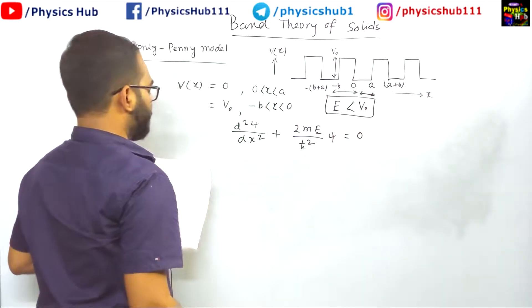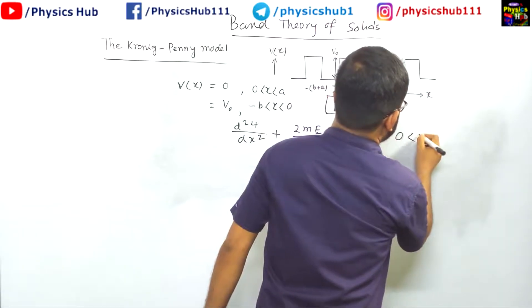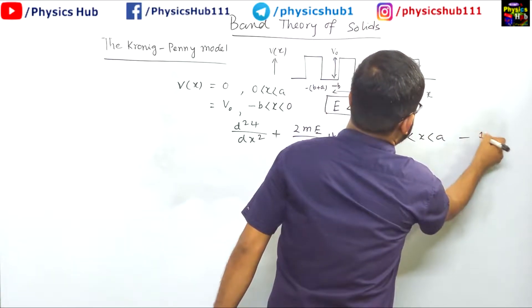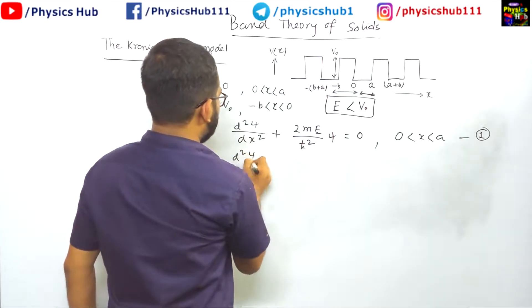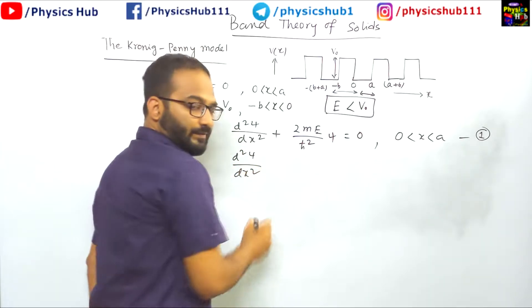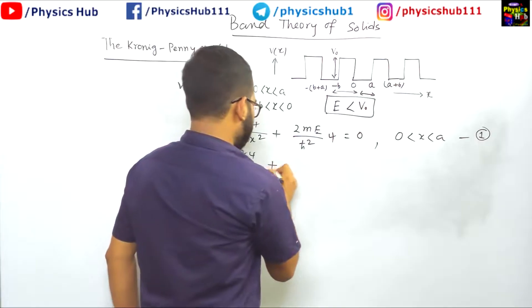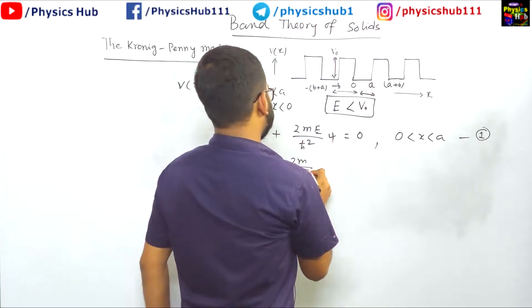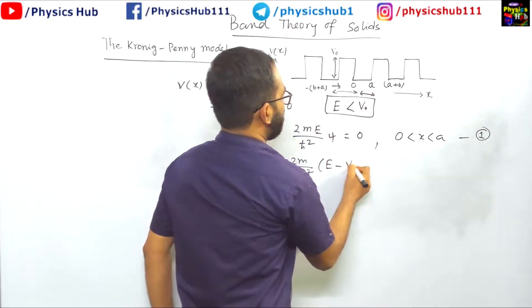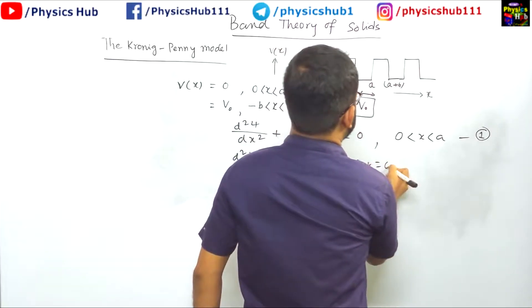This will be the first equation, this is for the region 0 to A. So this is equation number 1. For the second equation what we are writing d²ψ/dx² plus 2m/ℏ² we can write E minus V₀ into ψ equals 0.